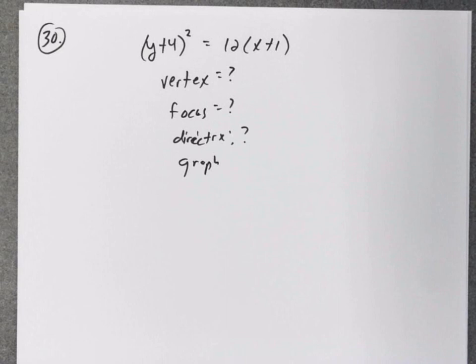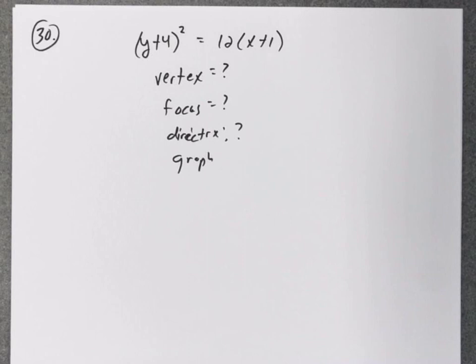Now, the next problem, they actually give us the equation of the parabola. (y + 4)² = 12(x + 1). And they want to know the vertex, the focus, the directrix, and then sketch the graph.